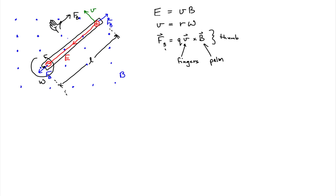This electric field is actually non-uniform, because its value depends on how far away we are from the pivot point. Since speed equals the distance from the axis of rotation times the angular speed, we can say the electric field equals r times omega times B — the product of the distance from the axis of rotation, the angular speed, and the magnetic field magnitude. The electric field is zero at the axis of rotation and maximum at the end of the bar.